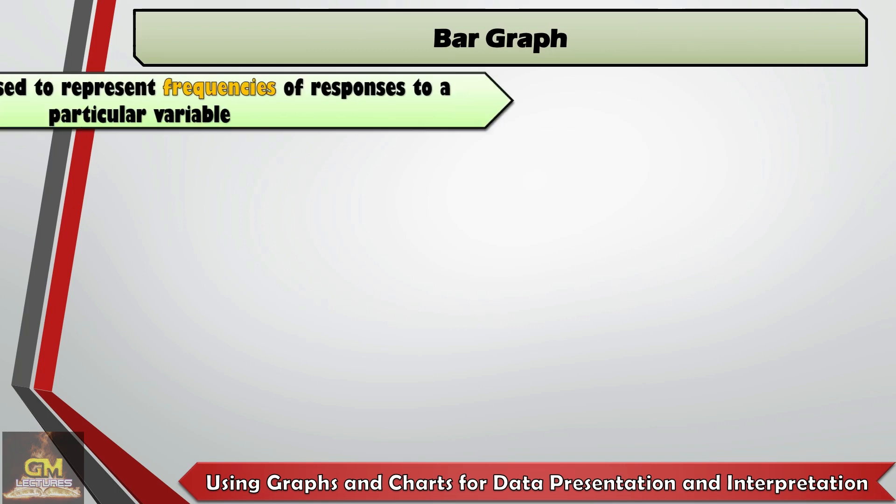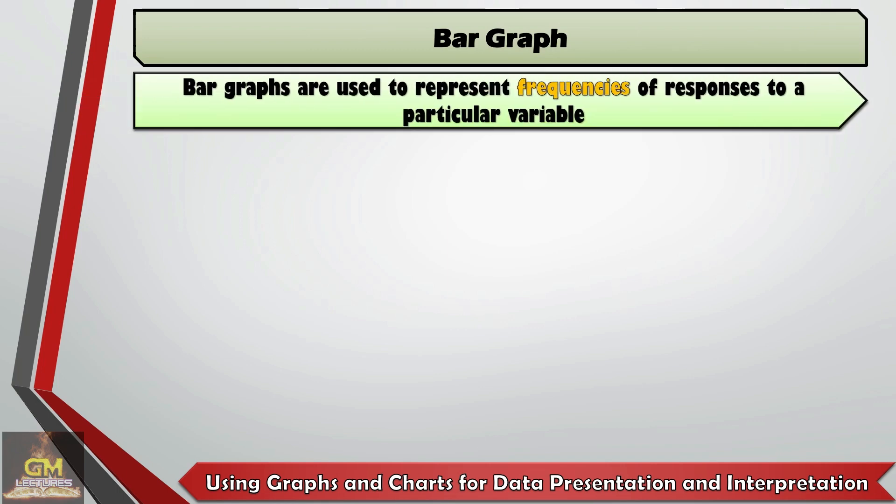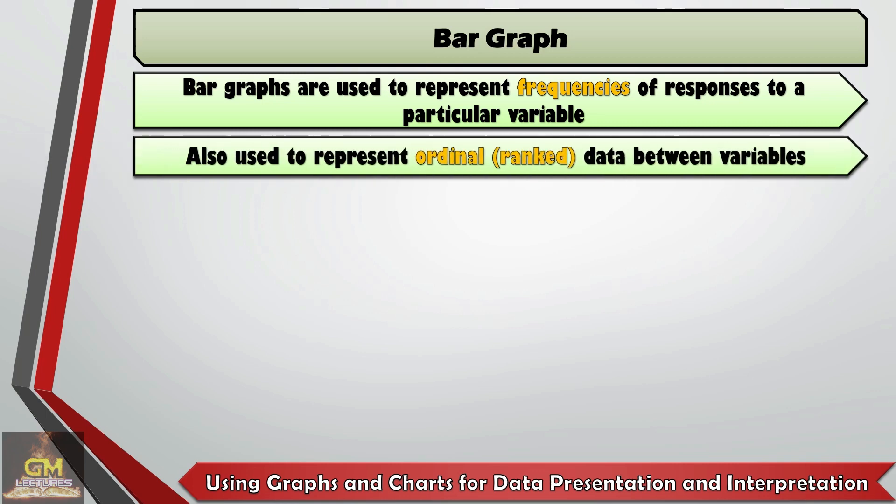Next, we have bar graphs. Bar graphs are used to represent frequencies of responses to a particular variable. It is also used to represent ordinal or ranked data between variables.